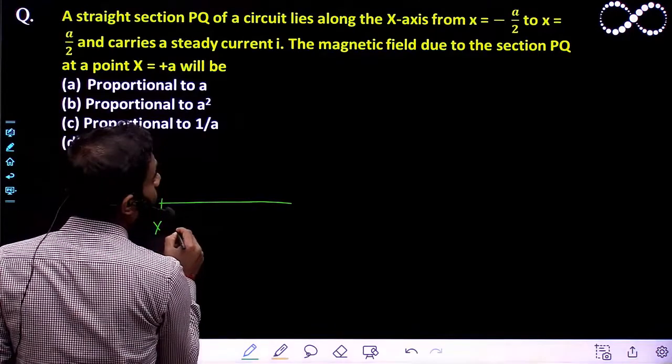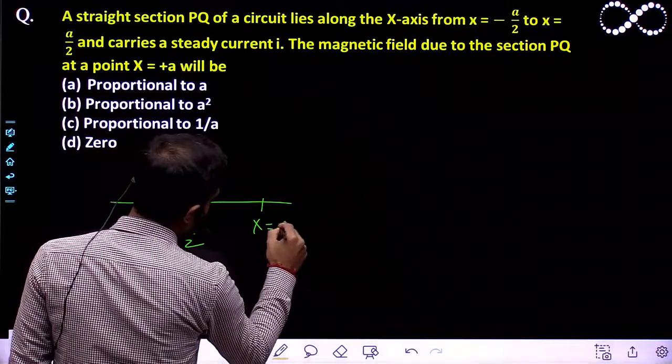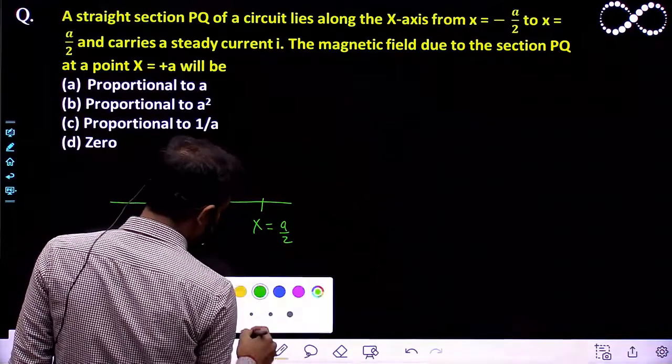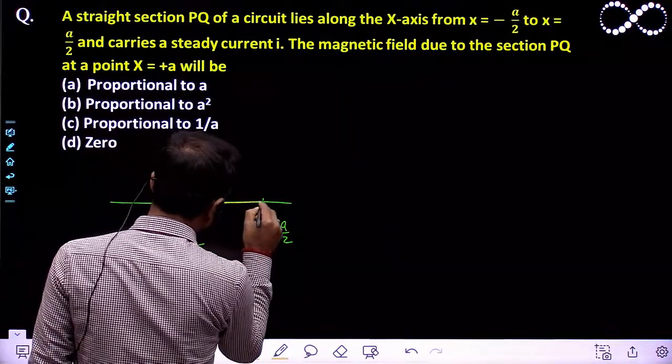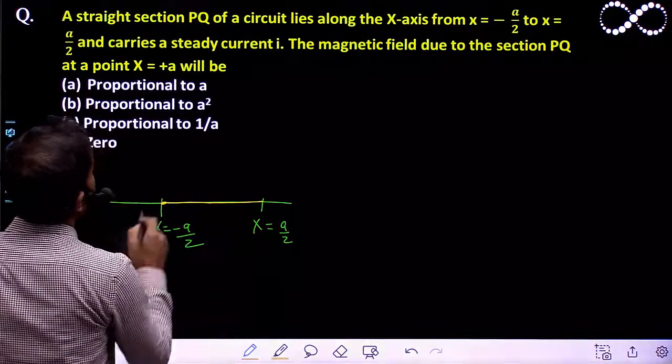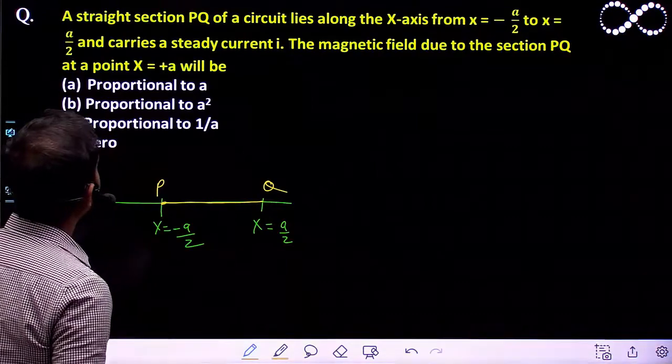From X equals minus A by 2 to X equals plus A by 2, a straight conductor lies between these two points P and Q and carries steady current I.